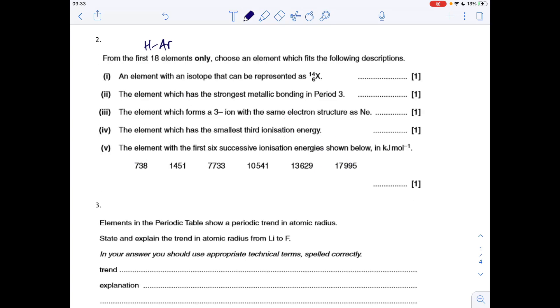Moving on to question 2. We can only choose from the first 18 elements, so that's hydrogen to argon. Which fits the following descriptions? Element with an isotope that can be represented like that. Well the key thing there is that's 6, it's proton number of 6, so it's got to be carbon.